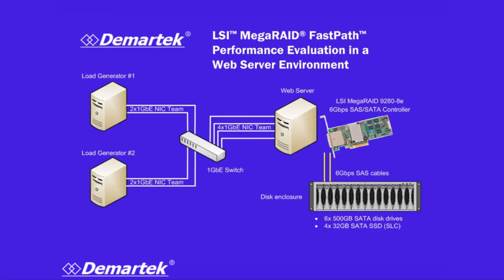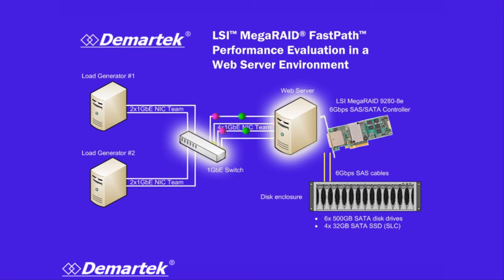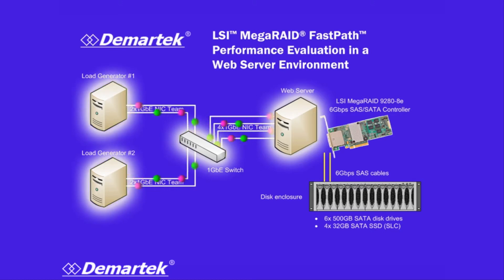You see this is something similar to what we've done before. We have a web server in the middle here. We have a network switch using one gigabit, and we have two different servers generating load across the network over to the web server. Inside the web server, we have an LSI Mega Raid 9280 RAID controller, and behind that RAID controller is connected a disk enclosure with a collection of disk drives.